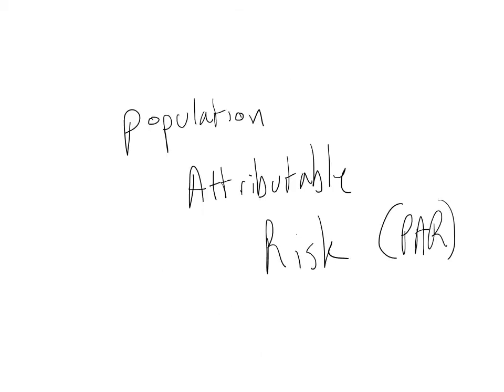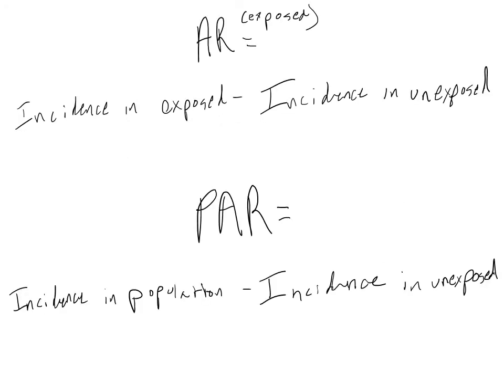Now let's look at population attributable risk, or the incidence of cardiovascular disease in the population that is attributable to smoking. The formula is very similar to attributable risk in the exposed — we subtract the incidence in the unexposed from the incidence in the population. In other words, if we take a look at our population and remove the risk associated with factors other than smoking, how much risk is left over? This is the amount of risk we can attribute to smoking.